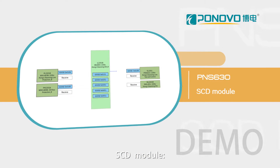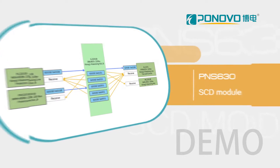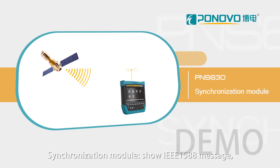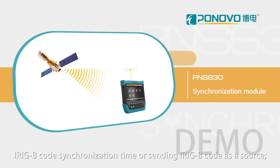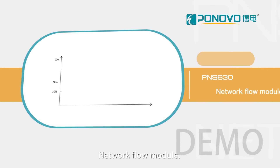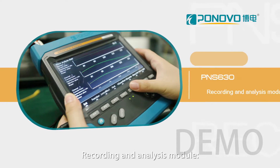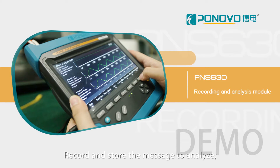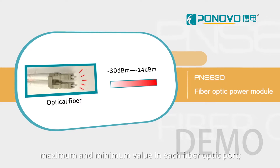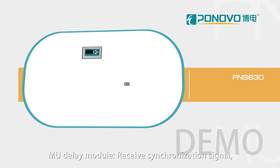The SCD module shows the varying connections between devices and virtual terminals in SCD files. The synchronization module shows IEEE 1588 message and IRIG-B code synchronization time, or can send IRIG-B code as a source. The net workflow module monitors the received message flow from each fiber optic. The recording and analysis module records and stores messages for analysis. The fiber optic power module checks the real-time, average, maximum, and minimum value in each fiber optic port.